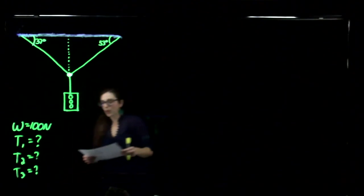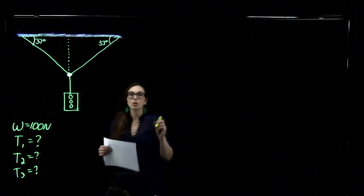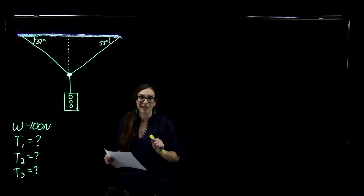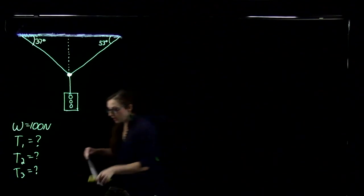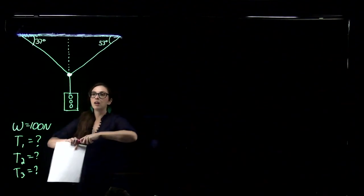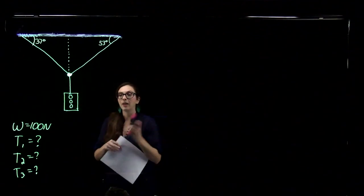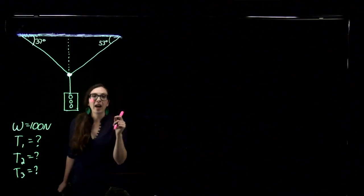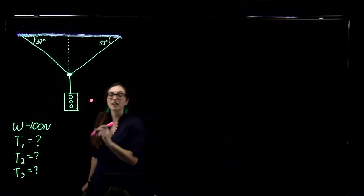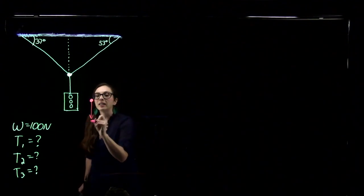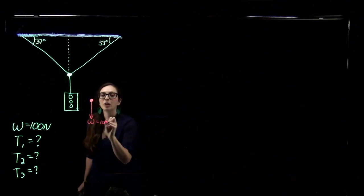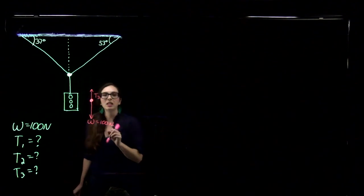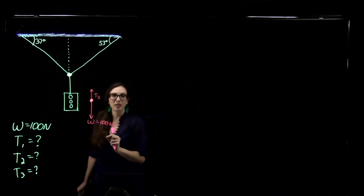What I'm going to do is draw the free body diagram for our stoplight. If I draw the free body diagram for the stoplight, the stoplight has two forces acting on it. It's got its weight acting down — that's equal to our 100 newtons — and it's got tension, which I'm calling T3, pulling upward on it.